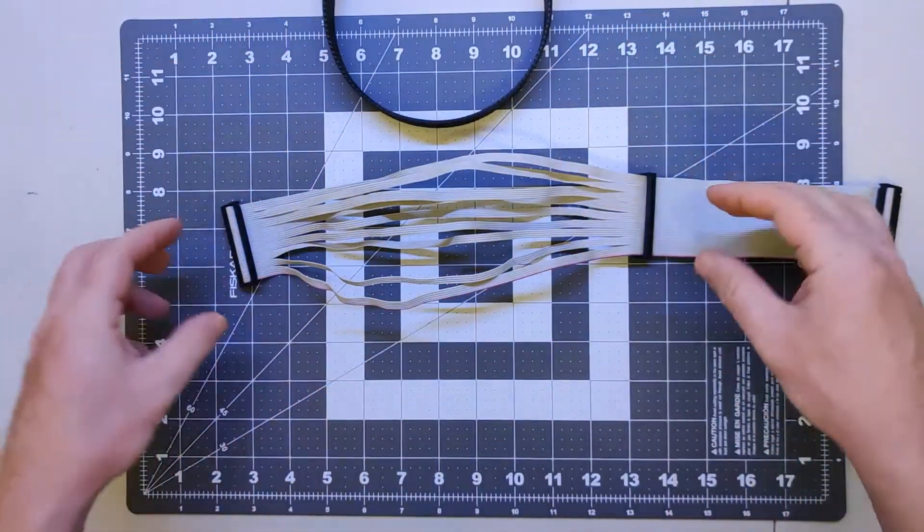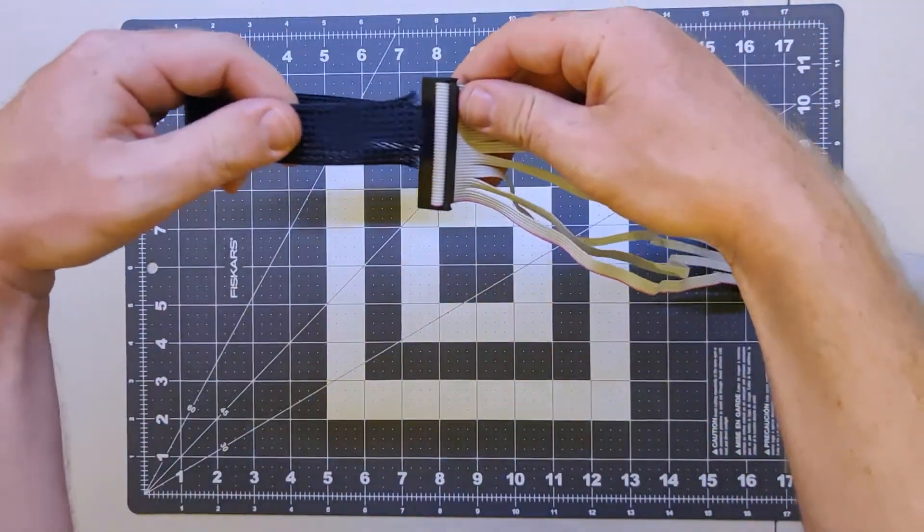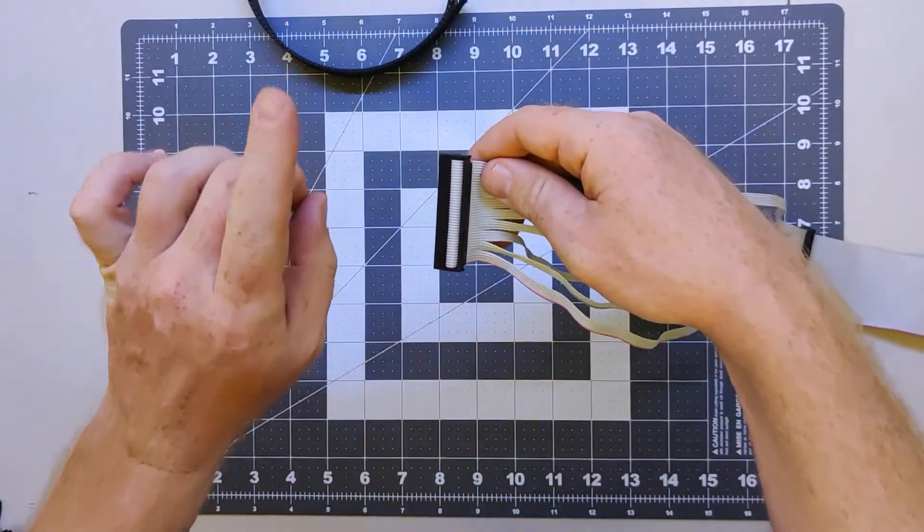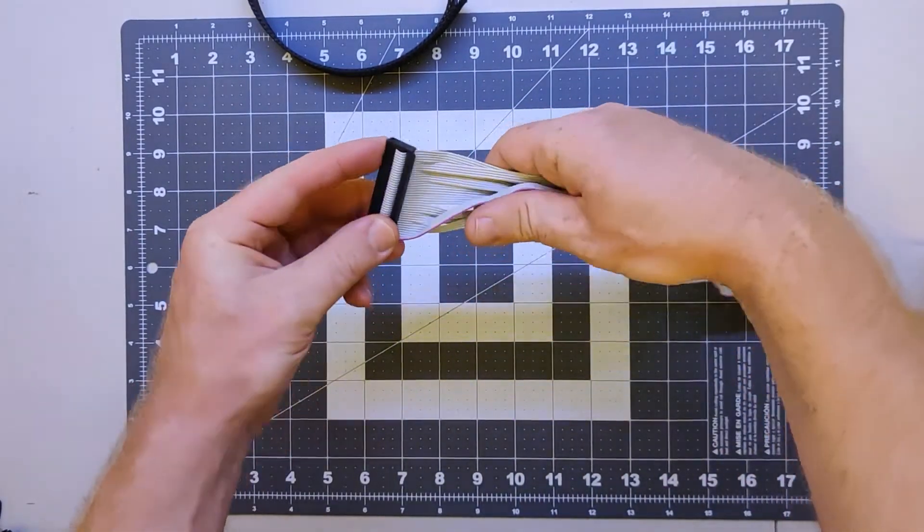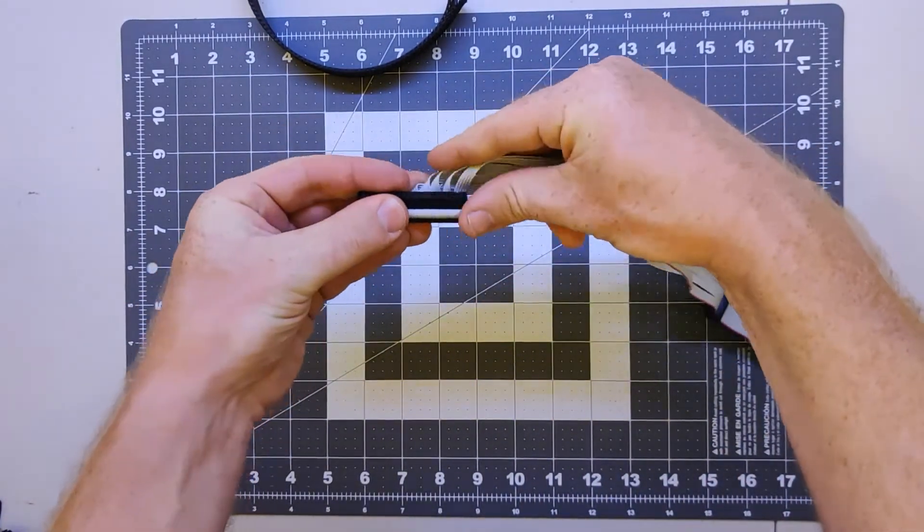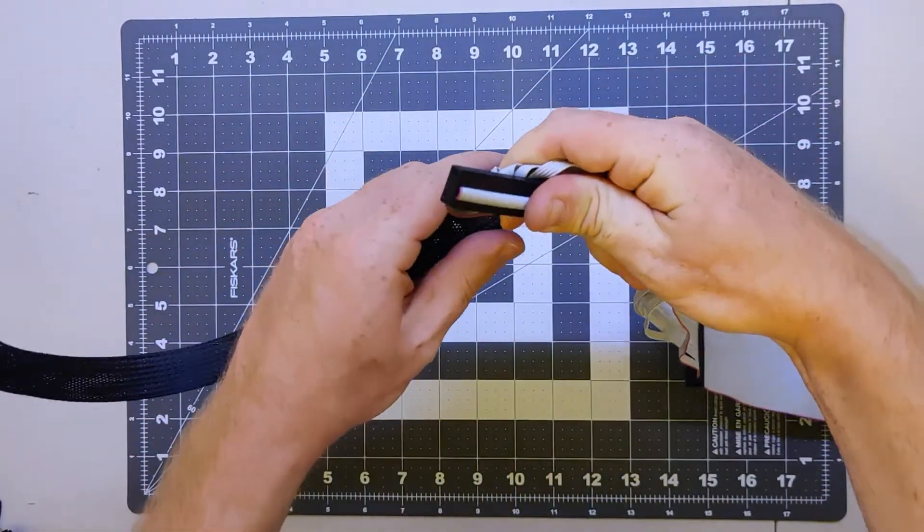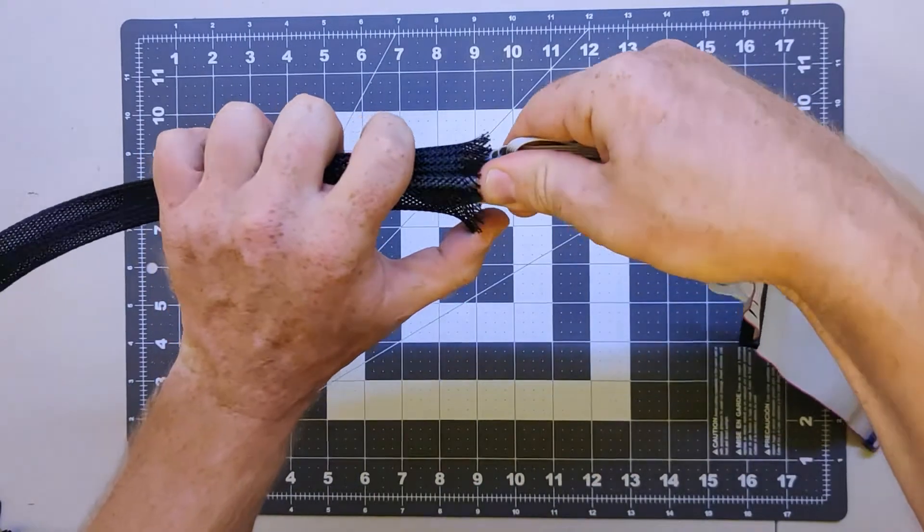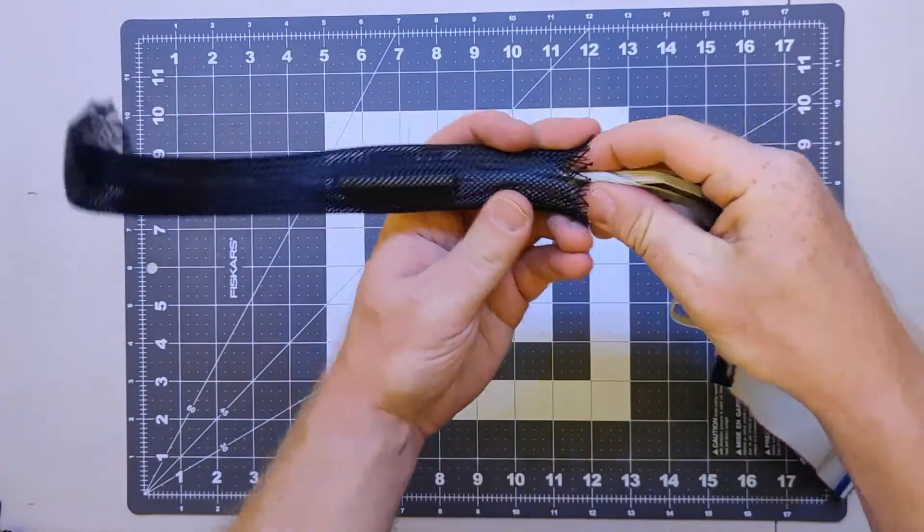With our sheathing prepared, we need to get it around the cable between the two connector ends. The way we do this is to take the connector end and fold it 90 degrees so that its length is parallel to the cable. We then take the sheathing, expand it a bit, and then insert the cable into it. Continue to work the cable through the sheathing until the connector end comes out the other side.